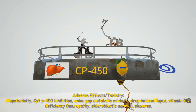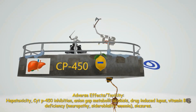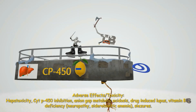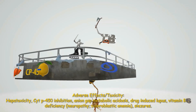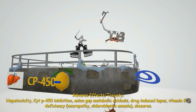Next we see the CYP450 also exploding, reminding us of cytochrome P450 inhibition. Next to that is a lemon with a minus/anion sign on it — the lemon reminds us of metabolic acidosis, and the anion sign reminds us that another adverse effect of isoniazid is anion gap metabolic acidosis.